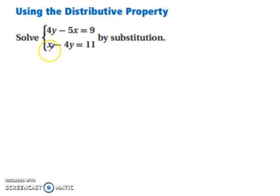The only variable that that's going to be easy to do that for is the x. All these other ones are going to be way too much work. So we've got x minus 4y equals 11.